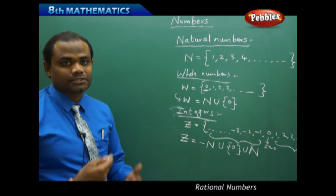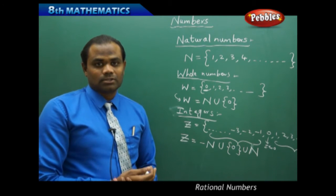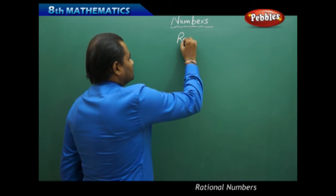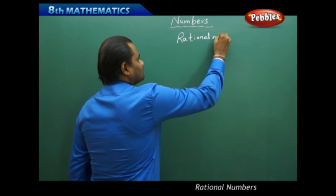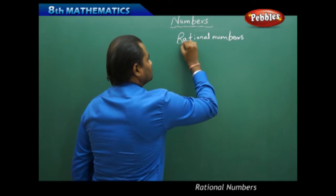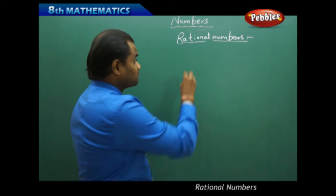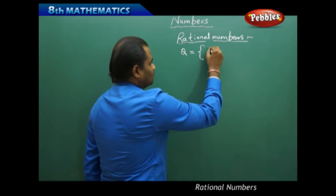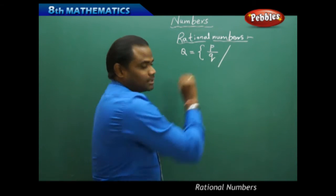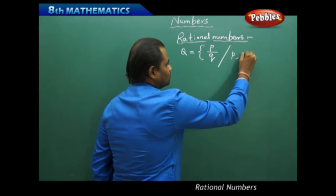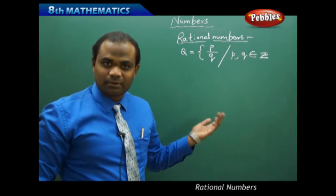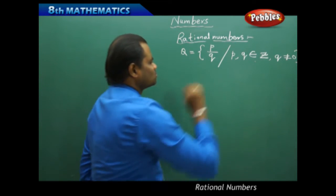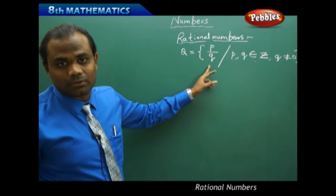Next comes the set of rational numbers, which is more important compared to the other sets. Rational numbers are denoted with capital Q. We define rational numbers in set-builder form as all numbers which can be written in the form P by Q, such that P and Q must be integers and Q should not be equal to 0. Under these two conditions, we define the set of rational numbers.